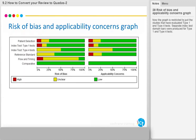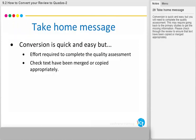Now the graph is restricted to just the studies that have evaluated Type 1 and Type 4 tests. Separate index test domain bars were produced for Type 1 and Type 4 tests. Conversion is quick and easy, but you will need to complete the quality assessment, which may require going back to the primary studies to get the missing information. Please check through the review to ensure that texts have been copied or merged appropriately.